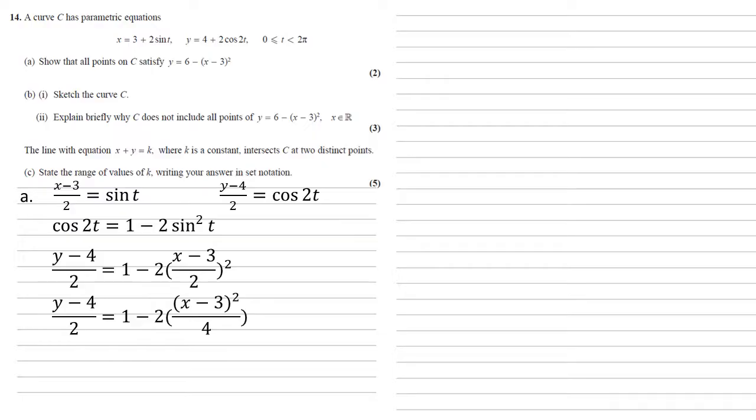Multiplying the bracket by the 2 and multiplying the entire thing by the 2 that's on the bottom of the left hand side gives us y minus 4 is equal to 2 minus x minus 3 squared, and bringing the 4 over to the right gives us y equals 6 minus x minus 3 squared as required.